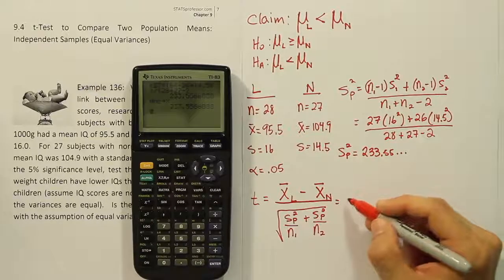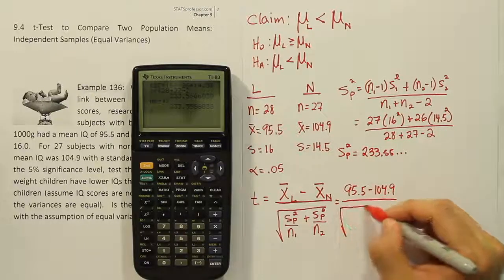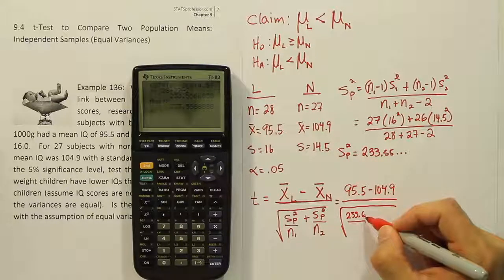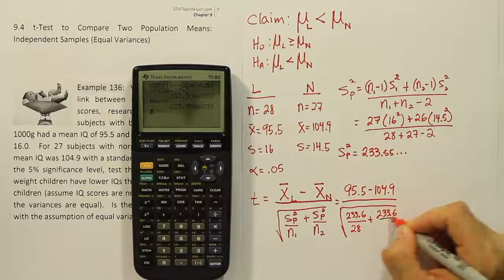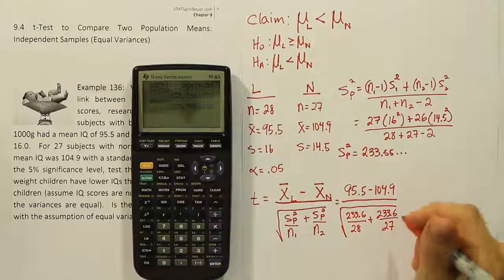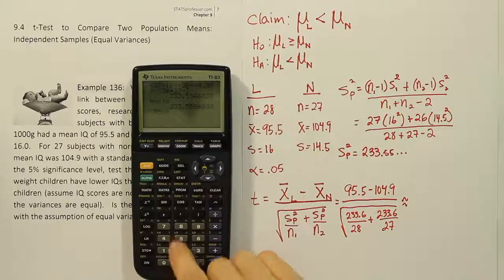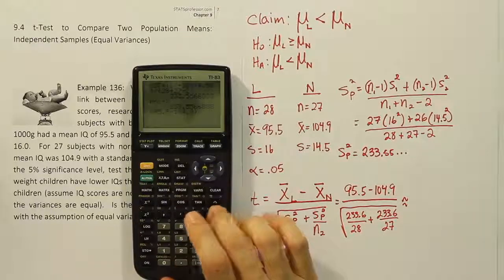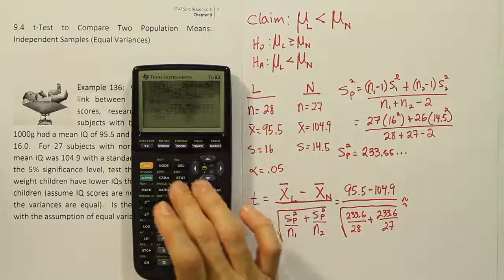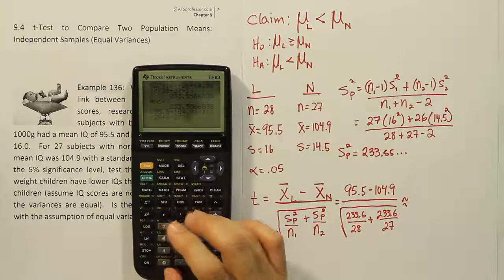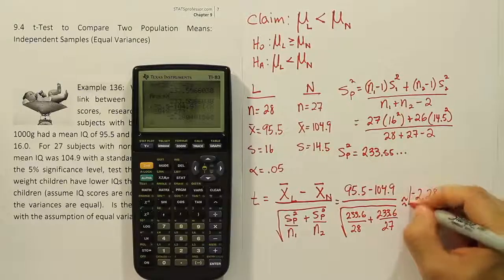Let's plug these numbers now into our formula. So the sample means they're going to be 95.5 minus 104.9, all divided by the square root of 233.6. I'm rounding it here only because I don't want to have to write all these decimal places. But remember, I'm going to use the full thing in my calculator. So 28 plus 233.6 over 27. And again, I'm not really using the rounded off value. I'm just writing it there. So let's get the answer then. So I'll use the parentheses on top for the top of this fraction. 95.5 minus 104.9. Close that up. Divide by the square root of. And now here's where that stored variable comes in handy. I'll do x divided by 28 plus x divided by 27. So that makes my work a little easier to enter. And when I hit enter there, I get negative 2.28. So negative 2.28. And that is my test stat.